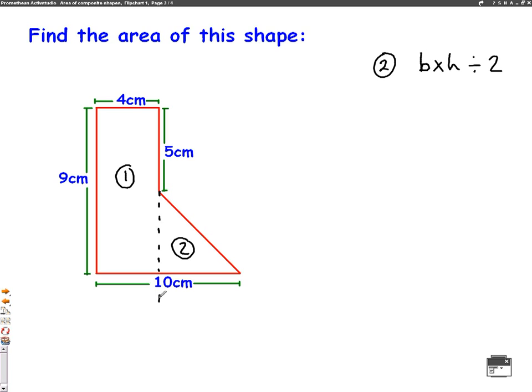So the base of the triangle is this bit here. That would be the base of the triangle. Well the whole way across is 10 and the first bit here is 4 centimetres. So to make it into 10 centimetres this must be 6. So the base of the triangle is 6 centimetres, 10 take away 4. The height of the triangle is this bit here. Well we know the whole height is 9 centimetres and up to here is 5 centimetres. So 9 take away 5 is 4, so this is 4 centimetres.